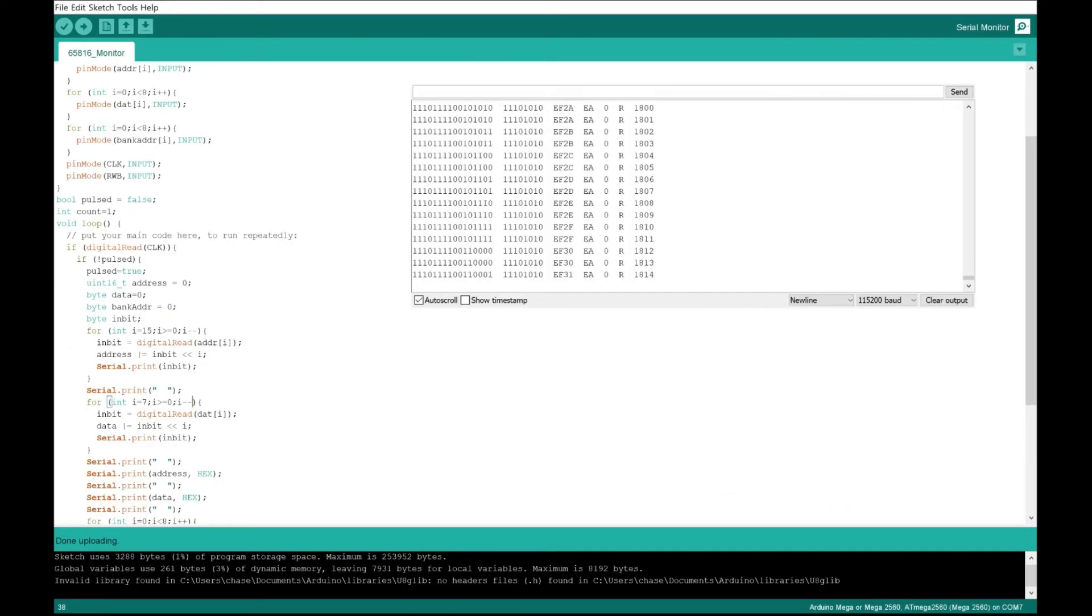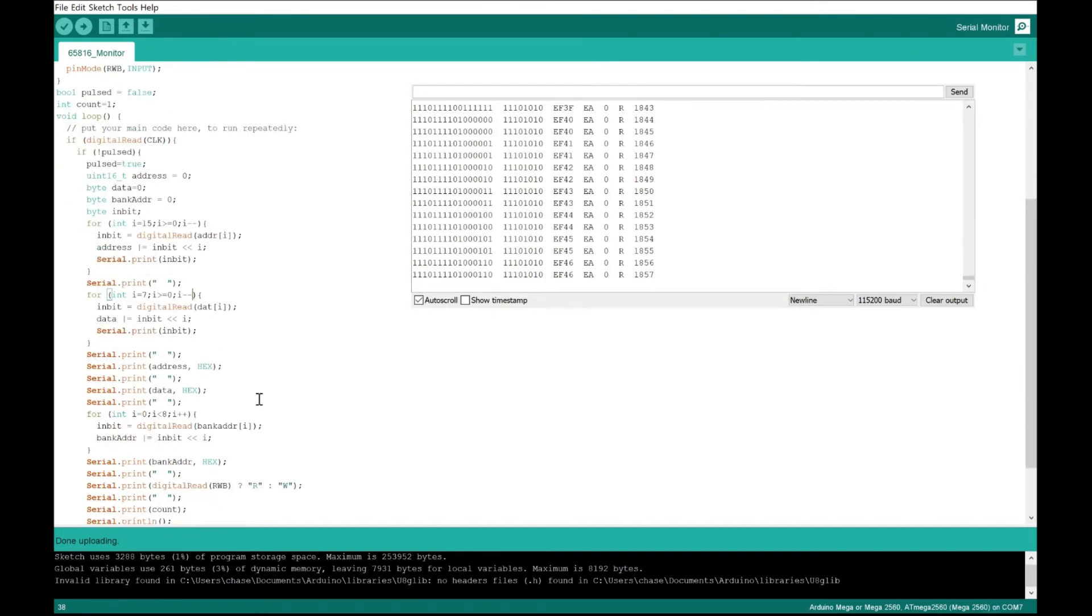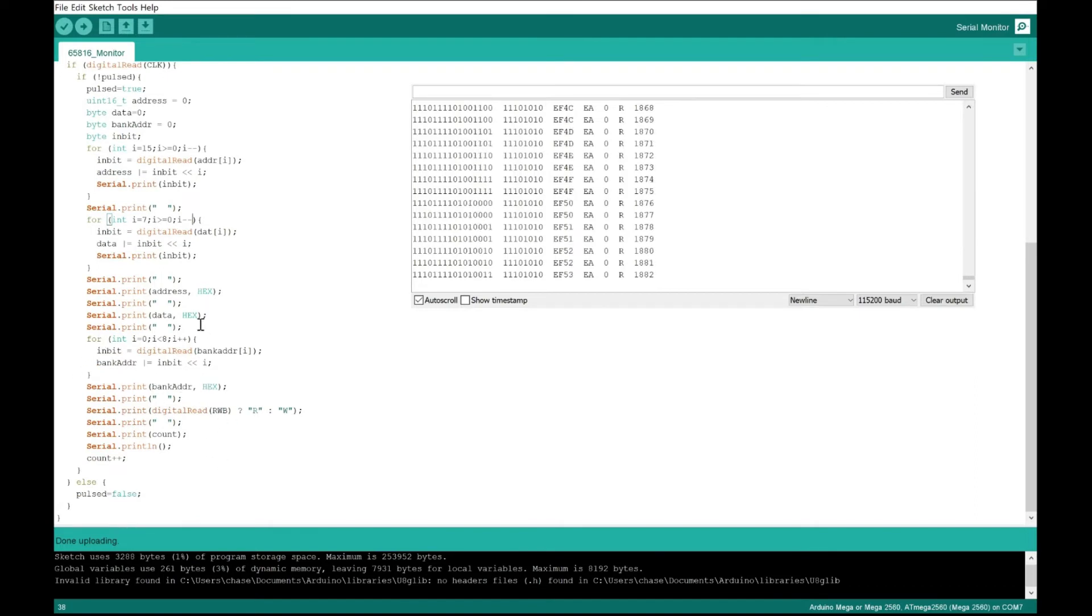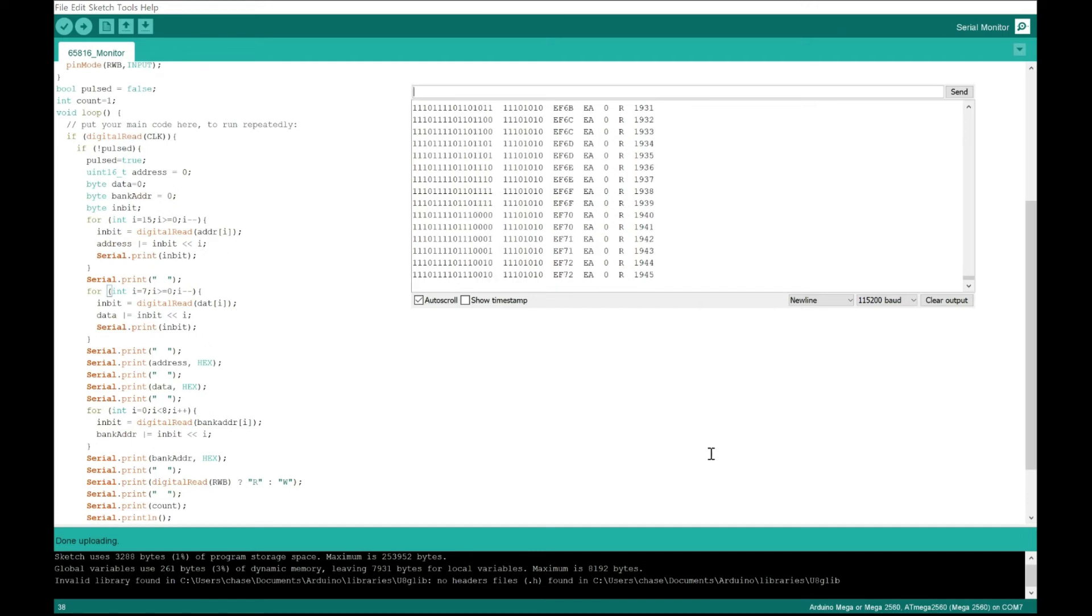I've written some code here that mimics the 6502 monitor that Ben Eater used, but instead, it also monitors the bank address, which is all the way down here. Most of the other functions are also the same, monitors the read-write, and then monitors the data bus and the address bus. If we look at the serial monitor here, we can see it's just behaving just like we wanted to. You can see that it's counting addresses. That's expected, because the EA no-op instruction is using the implied addressing mode, and it only should take two clock cycles before it moves on to the next instruction, which, like we hard-coded, is just EA. So we can claim our victory here, and we can move on to the next part, which is starting to code something a little bit more advanced with this computer.